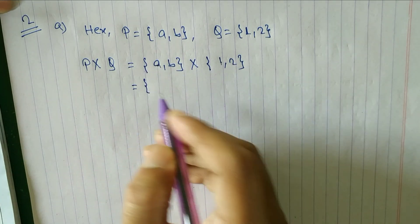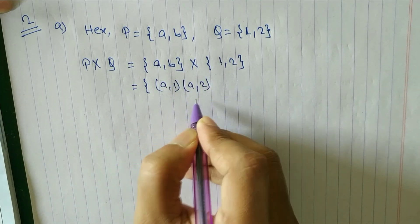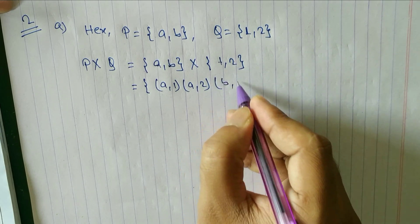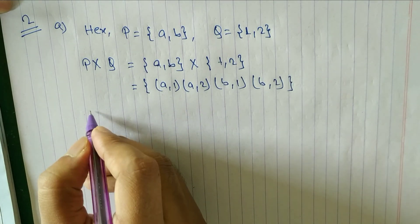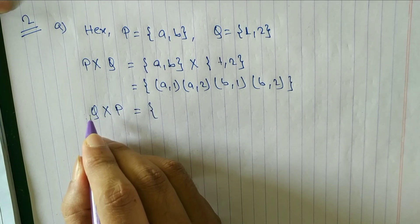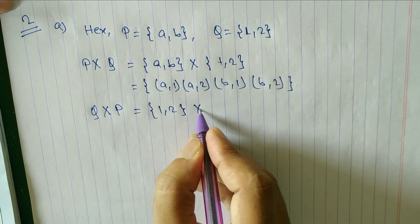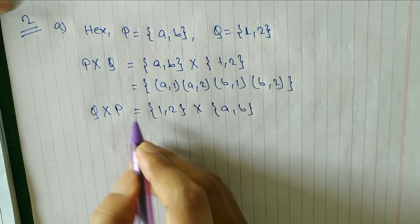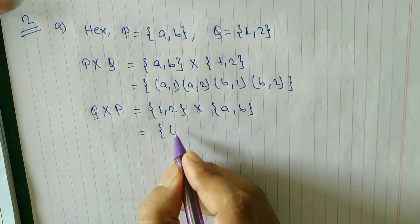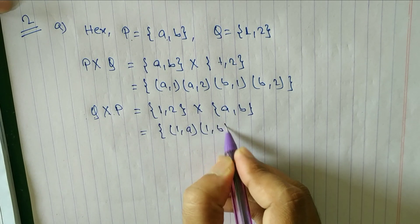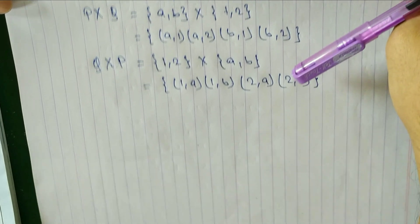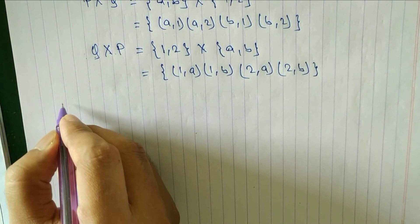For p×q: we write (a,1), (a,2), (b,1), (b,2). For q×p: we write q = {1, 2} cross p = {a, b}, giving (1,a), (1,b), (2,a), (2,b). Hope you understand how to find p×q and q×p.